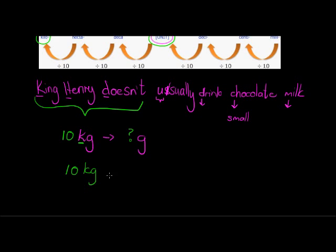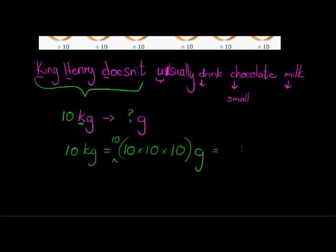So 10 kilograms is equal to 10 times 10 times 10 grams. So kilo gets replaced with multiply 10, multiply 10, multiply 10, so that I end up having 10,000 grams.